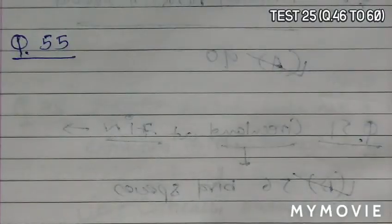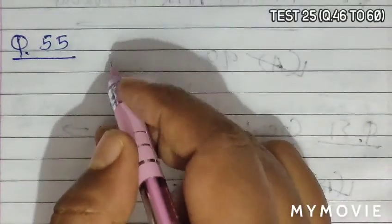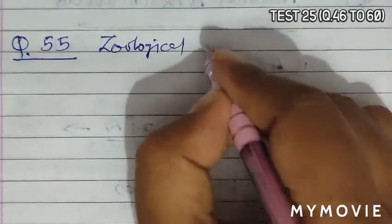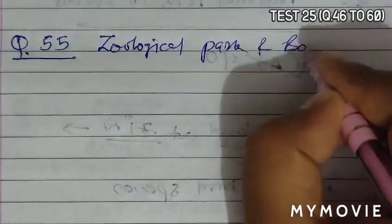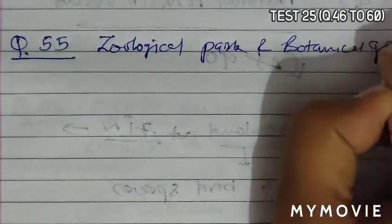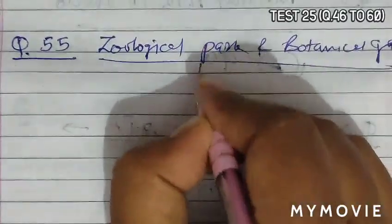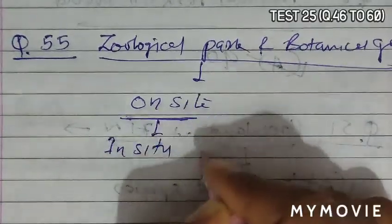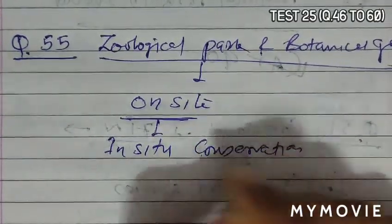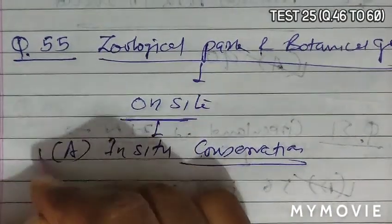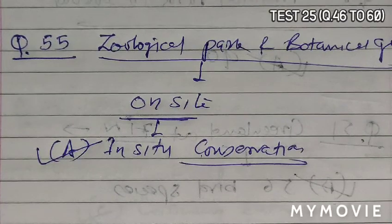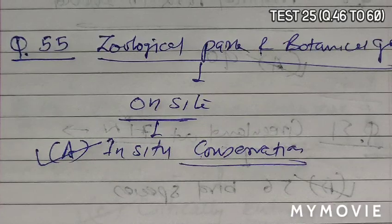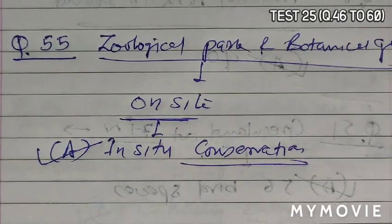Question 55 asks that zoological parks and botanical gardens are a part of what. Zoological parks and botanical gardens are on-site, means they are in-situ conservation phenomena. So A becomes correct answer, meaning in zoological parks animals are conserved at their original habitat. In botanical gardens also the plants are conserved in their original habitat.